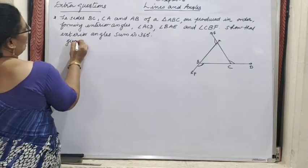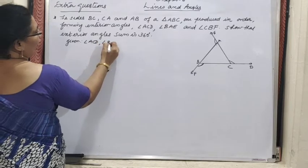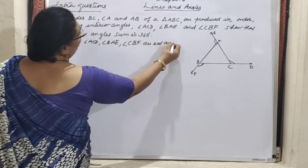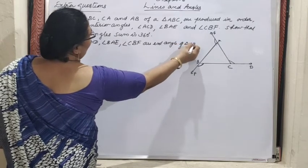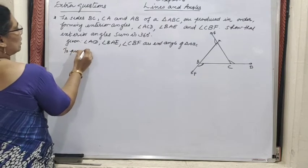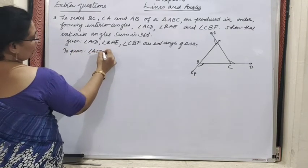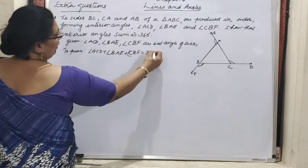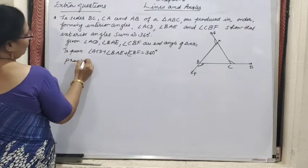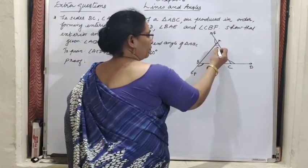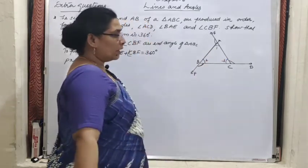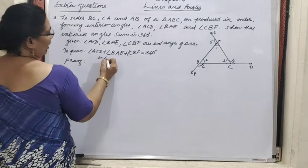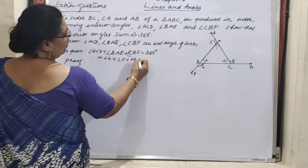Given: angles ACD, BAE, and CBF are exterior angles of triangle ABC. To prove: ACD plus BAE plus CBF equals 360 degrees. For the proof, we label the interior angles of the triangle as 1, 2, 3 and the exterior angles as 4, 5, 6. So instead we need to prove angle 4 plus angle 5 plus angle 6 equals 360 degrees.